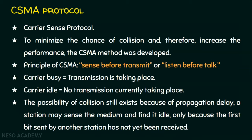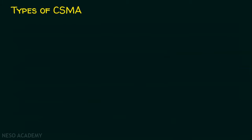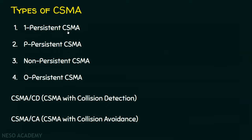Now let's see the various types of CSMA. Basically, we have four types: one-persistent CSMA, P-persistent CSMA, non-persistent CSMA, and O-persistent CSMA. The modified protocols are CSMA/CD — carrier sense multiple access with collision detection — and CSMA/CA — carrier sense multiple access with collision avoidance.